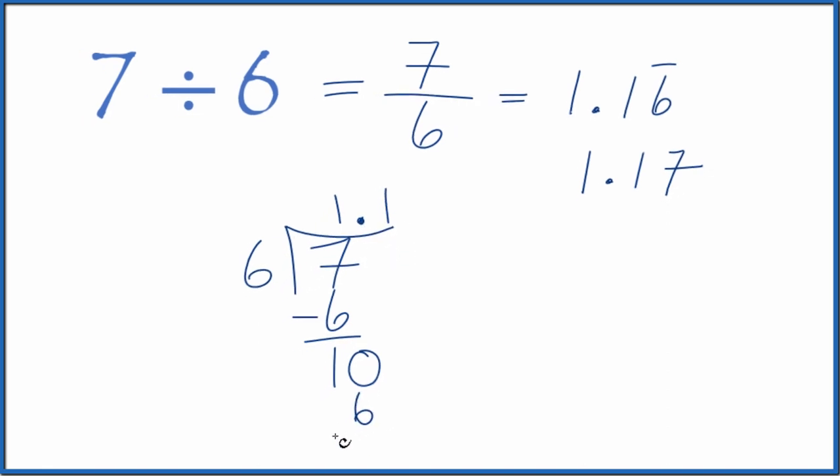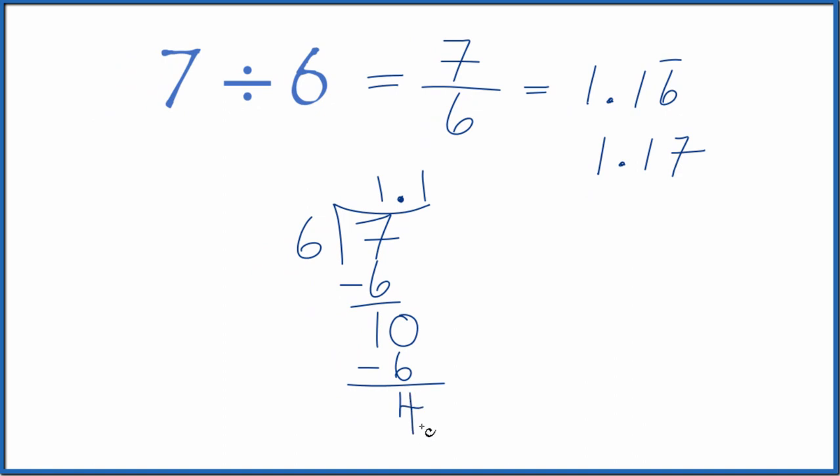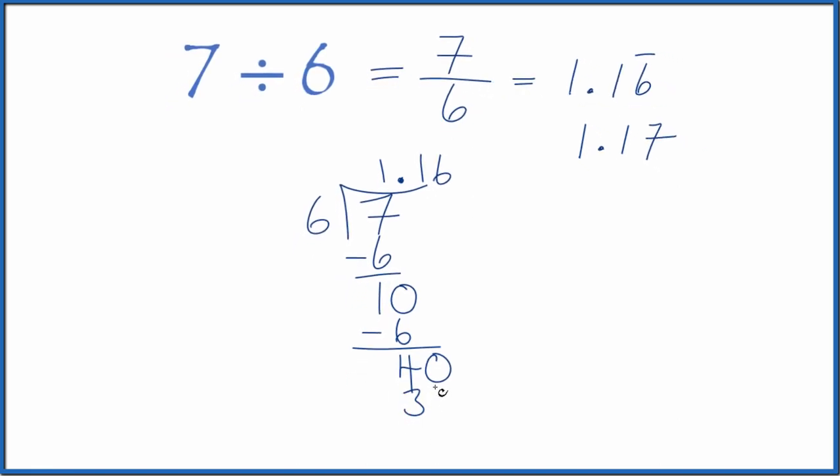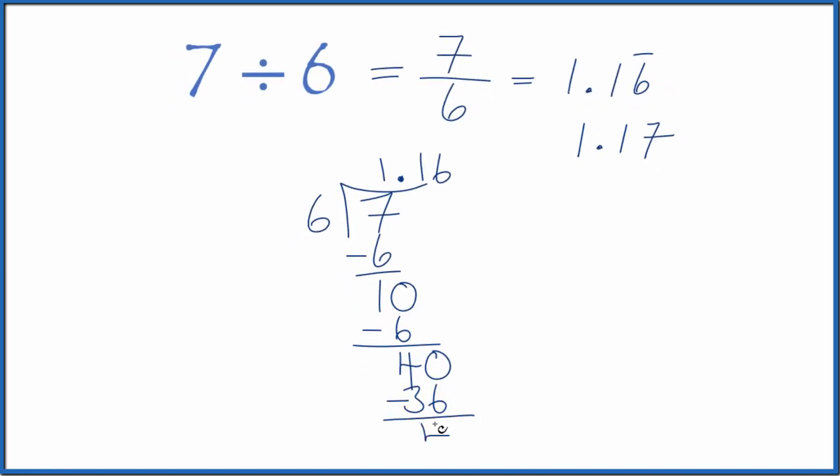So 1 times 6 is 6. We subtract and get 4. And let's see. Move over 1. Call this 40. And we'll move over 1. 6 times 6 is 36. So we subtract and get 4. We call it 40. So 6 times 6 is 36 again. And you can see the 6 is going to keep just repeating.